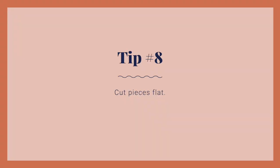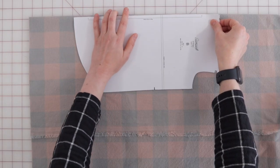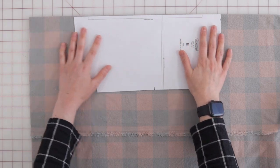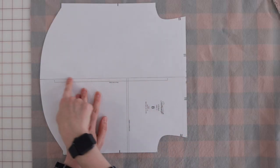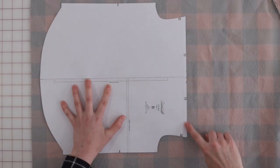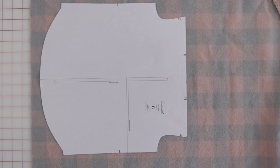Tip number eight, cut pieces flat. Although it can be done, cutting pieces on the fold is challenging when trying to match plaids and stripes. Instead, cut out your pieces flat to make sure every line is where you want it. This can also save you from needing to buy a lot of extra fabric.